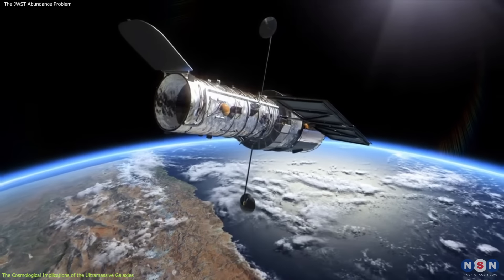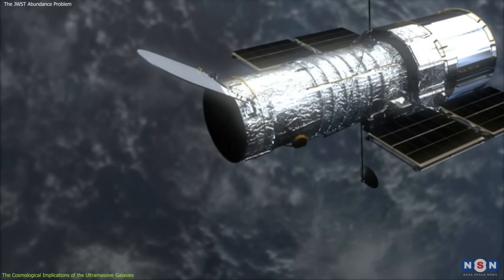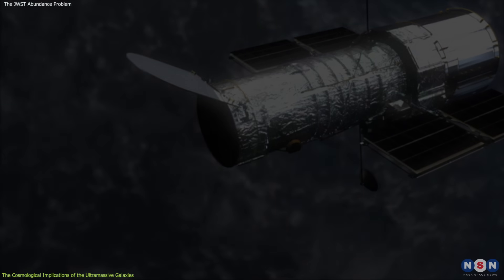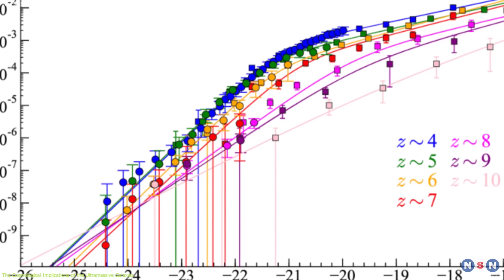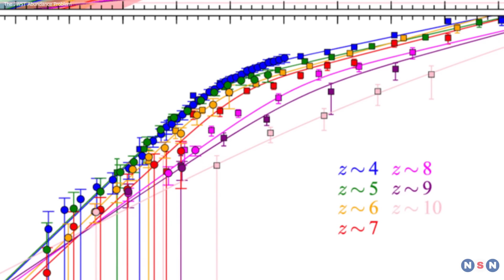This is where the Hubble Space Telescope comes in. It can measure the ultraviolet galaxy luminosity function, which is the number of galaxies per unit volume as a function of their brightness in the ultraviolet.